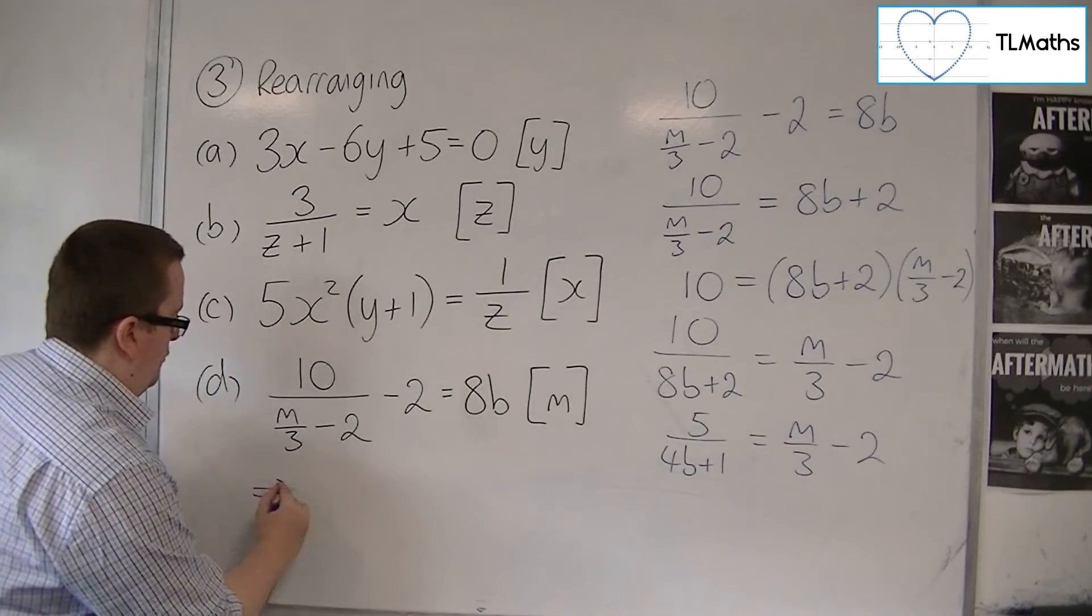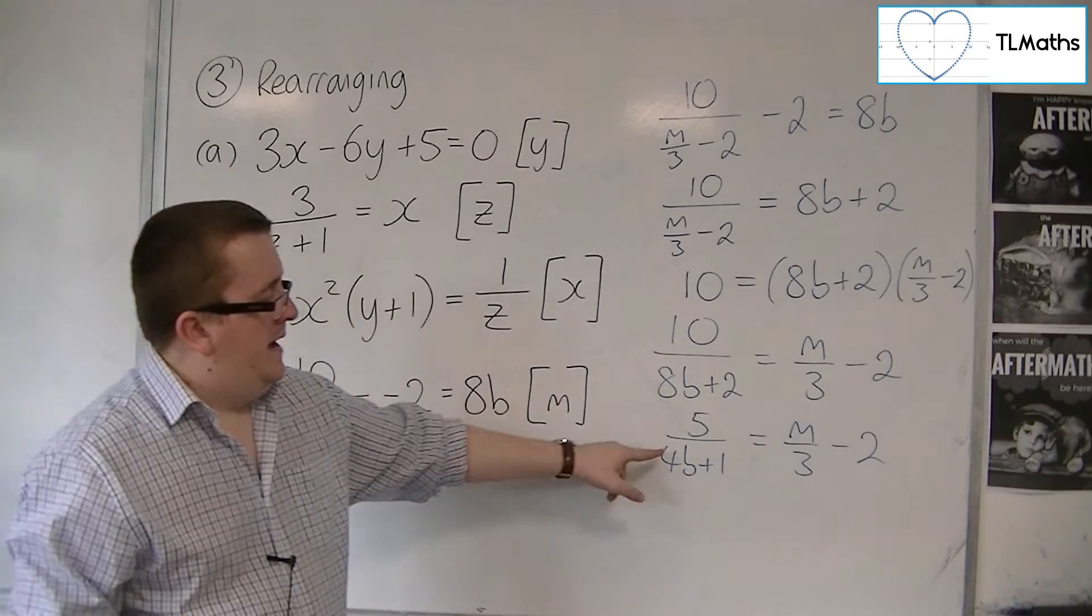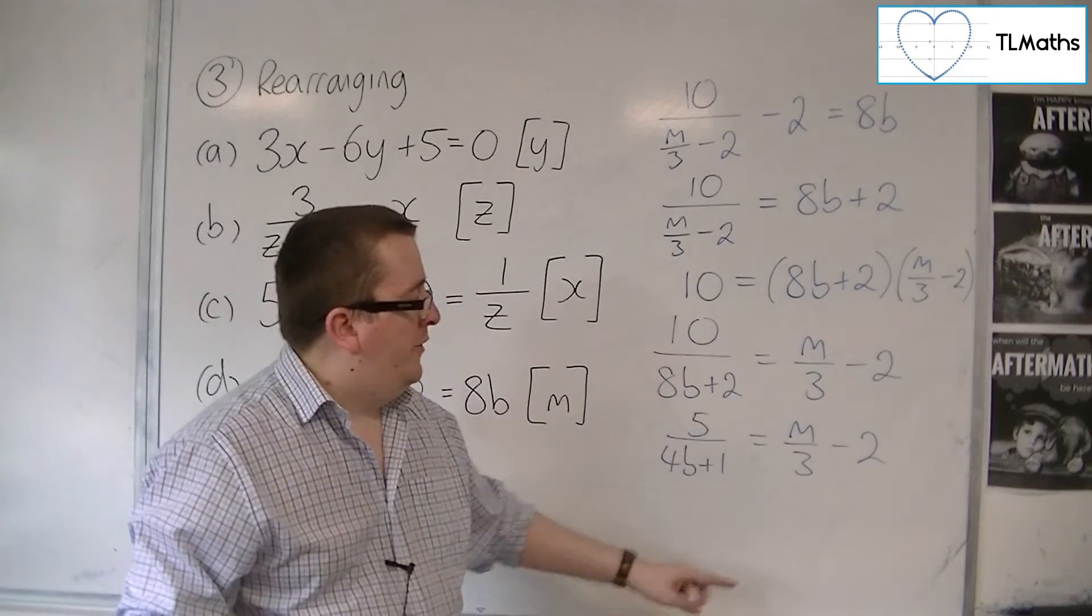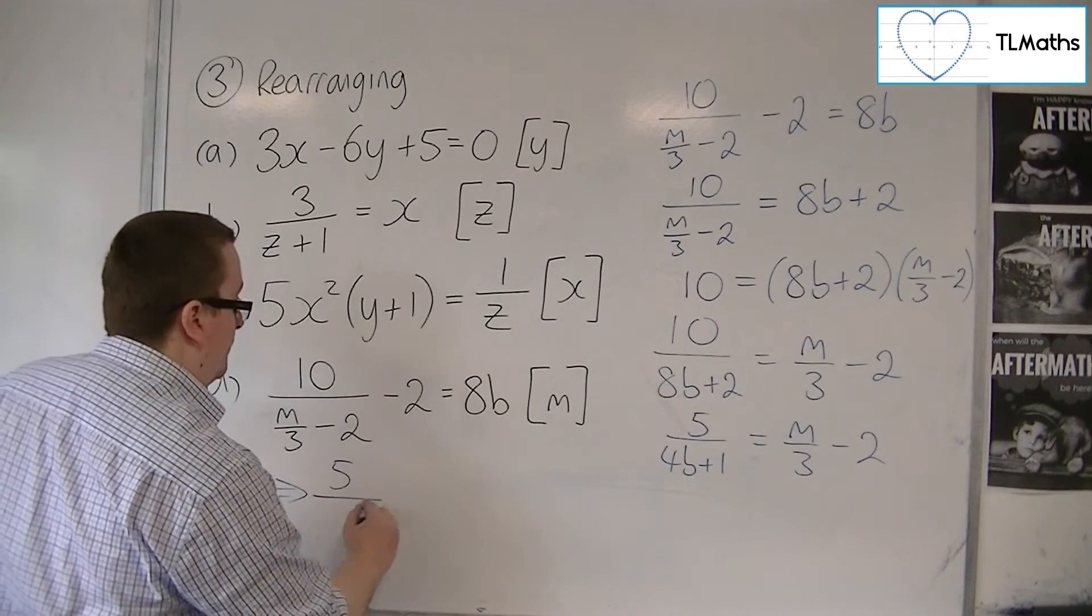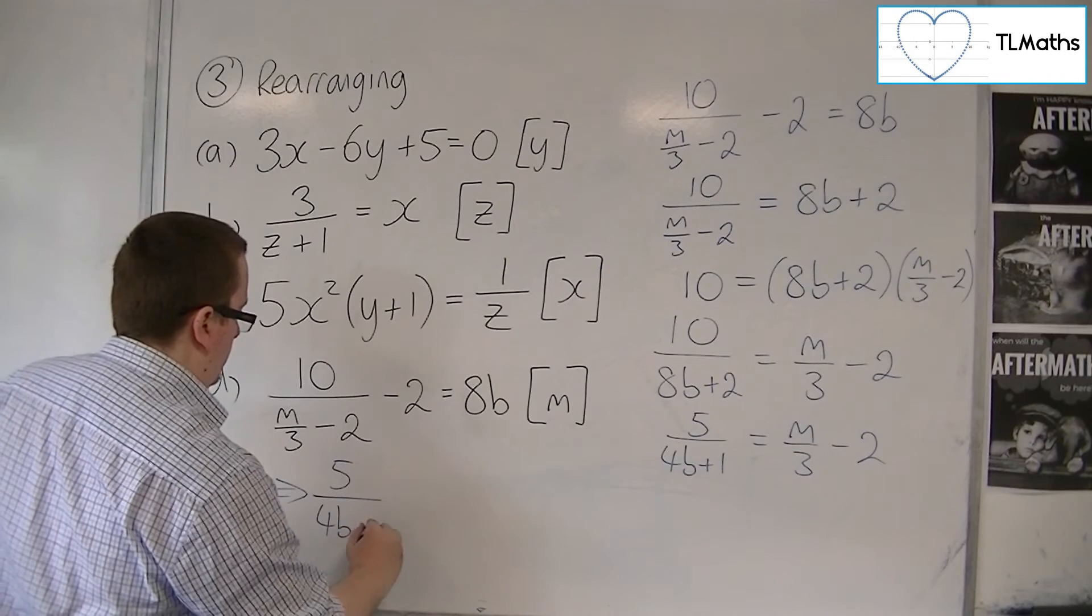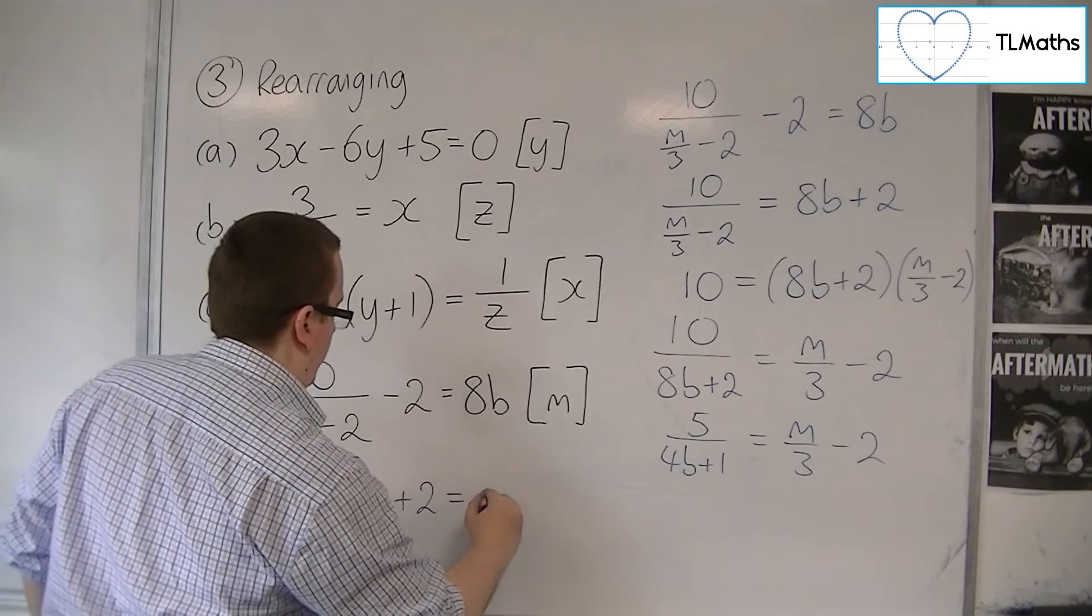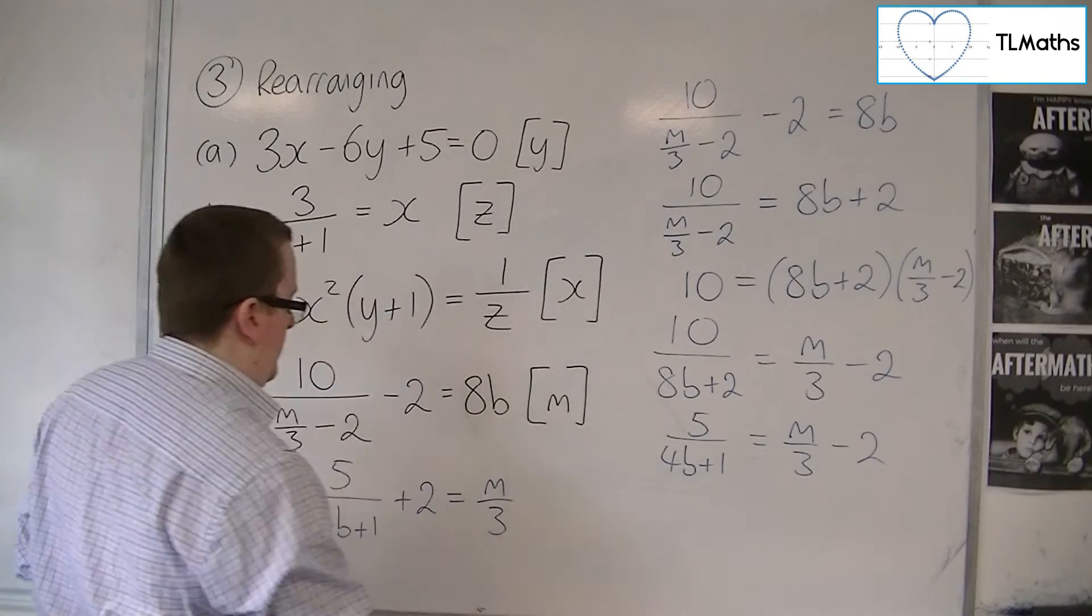So I'm going to move over here. Now, to get M by itself, I'm going to have to get rid of that minus 2. So I'm going to add 2 to both sides.